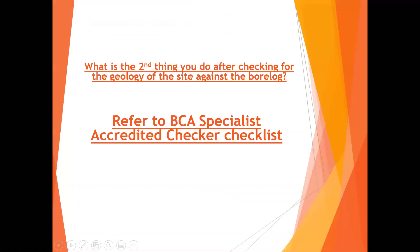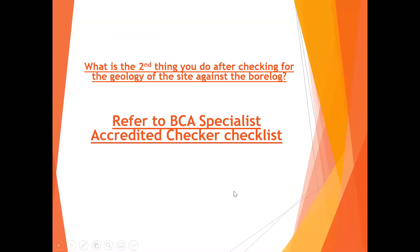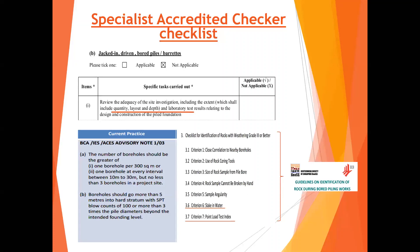Now, the second thing you do — refer to the BCA checklist. The BCA has a checklist with five minimum items we need to check. For those overseas: in Singapore, the designer passes their design to another checker — also a PE — to review. BCA tells us these are the five minimum items to check. I always throw the design back if these are not done. Even bored pile design, which seems straightforward, many people still cannot do it in compliance.